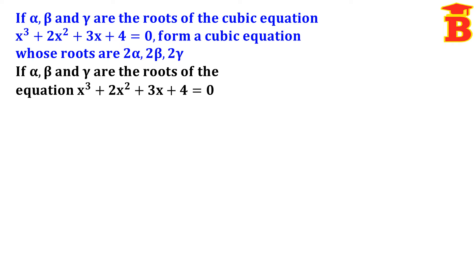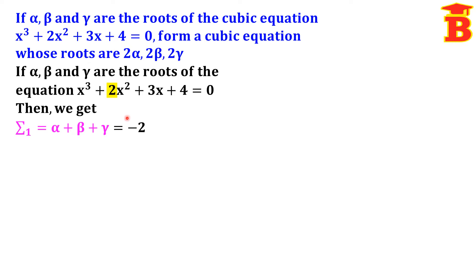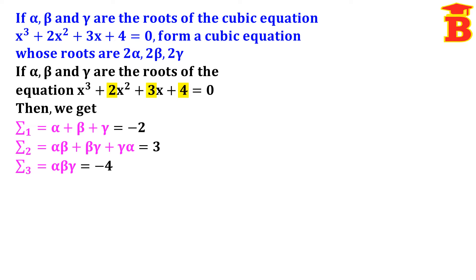Now we can write the values of sigma 1, sigma 2, sigma 3. Sigma 1 equals alpha plus beta plus gamma, which equals minus 2 — since the first term is x cubed we take the numbers in order and change the sign of alternate terms, so we change the sign of 2 to get minus 2. Next, sigma 2 equals alpha beta plus beta gamma plus gamma alpha, and we take the next number 3. Then sigma 3 equals alpha beta gamma; taking the next number 4 and changing the sign gives minus 4.